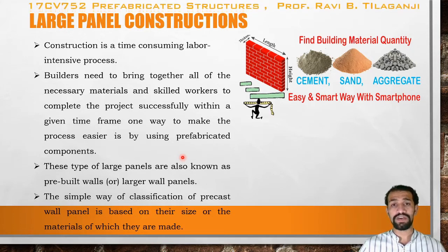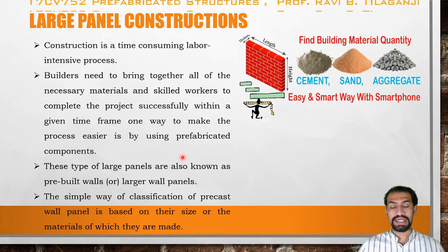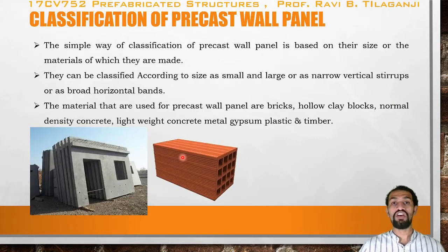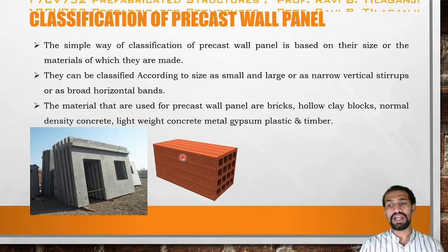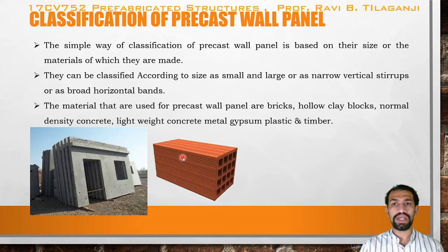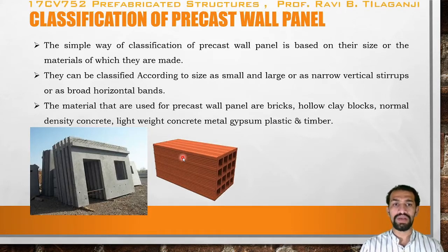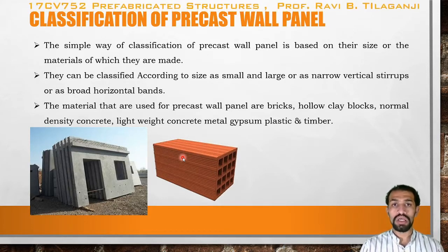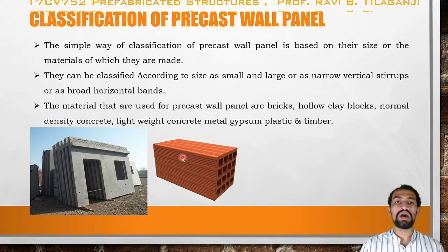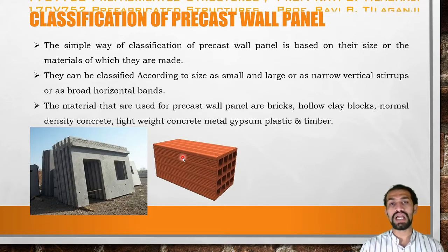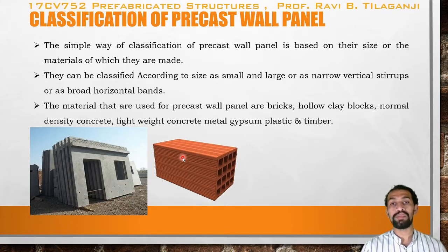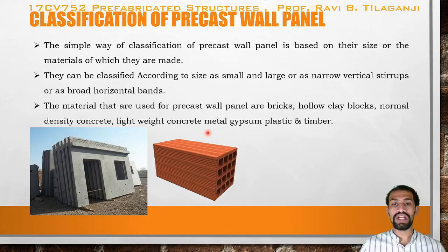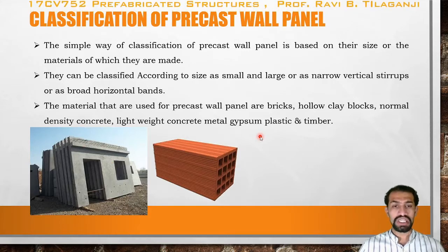The simple way of classification of precast wall panels is based on their size or the material they are made of. They can be classified according to size as small or large, or as narrow vertical strips or broad horizontal bands. The materials used for precast wall panels include brick, hollow clay blocks, normal density concrete, lightweight concrete, metal, gypsum, plastic, and timber.